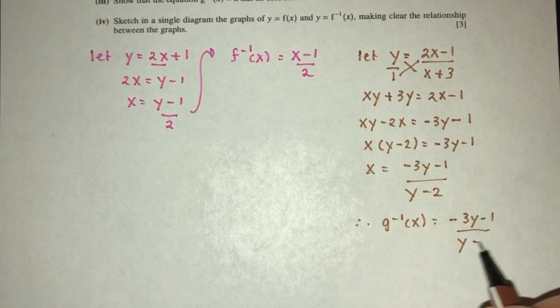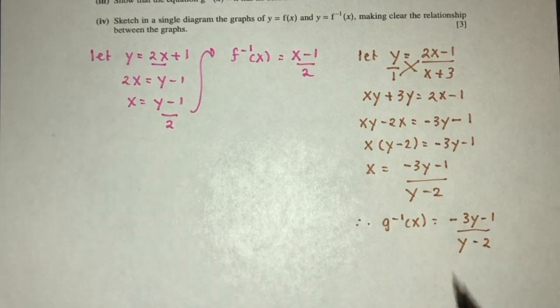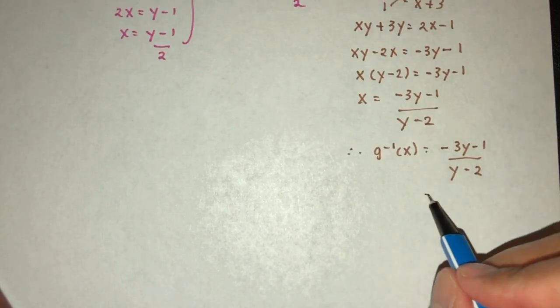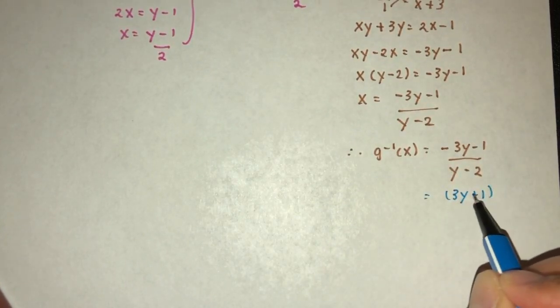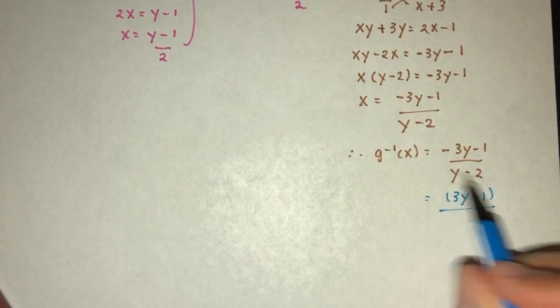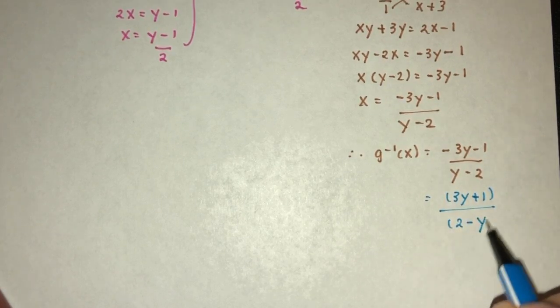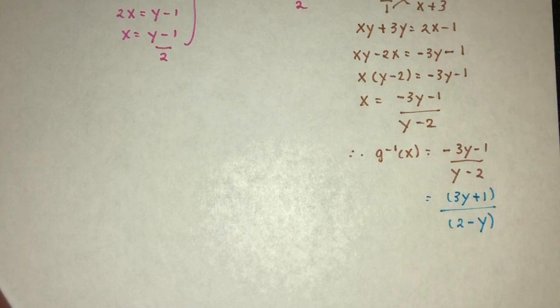So g inverse, in terms of x, we can write this the same way, there's no problem with that. Or you can also rewrite this as, simplify this as well, because you want to take out the value of minus outside, that will become 3y plus 1, because here we have minus, if we bring it below, it will become 2 minus y. Same thing, both are the same thing. Now that will be part 2 of the question.